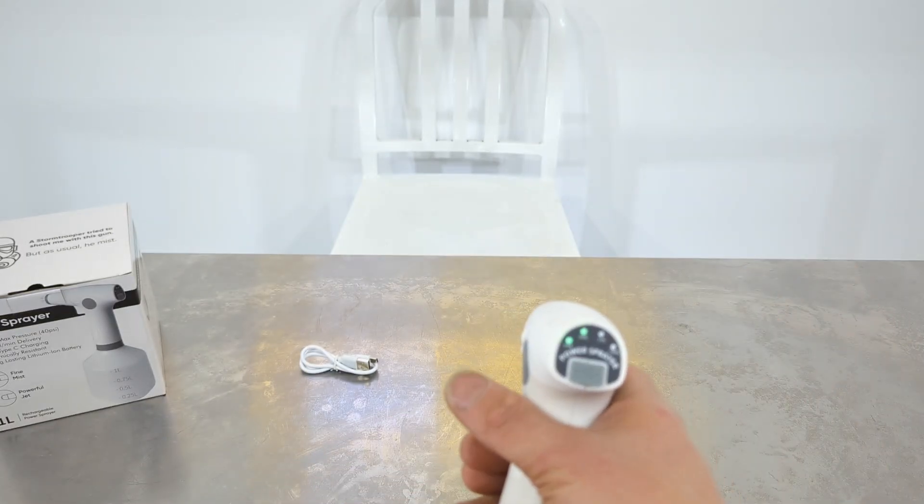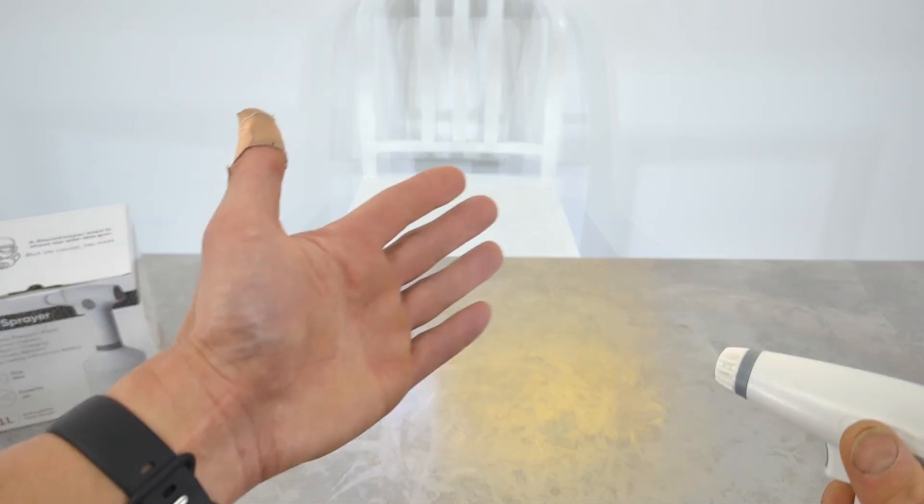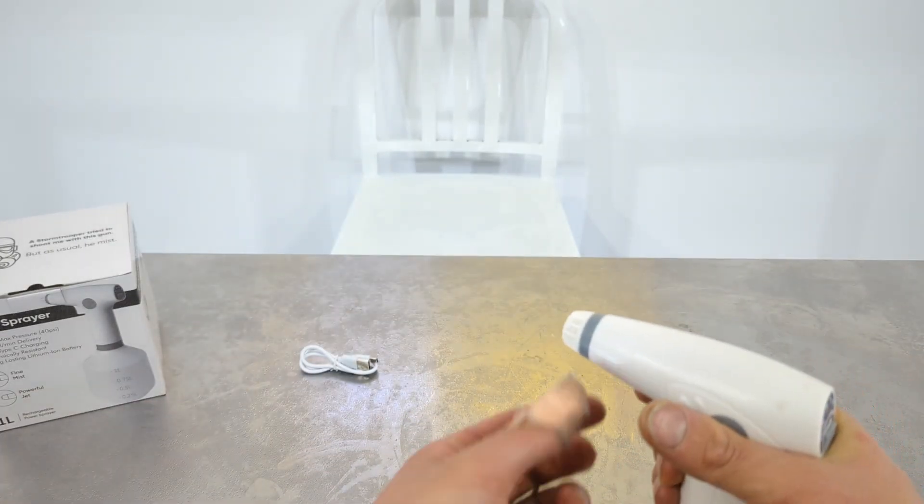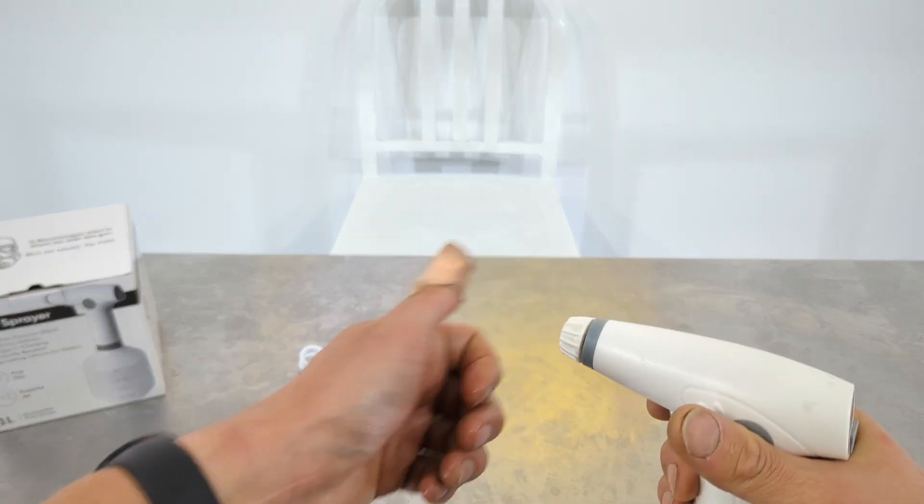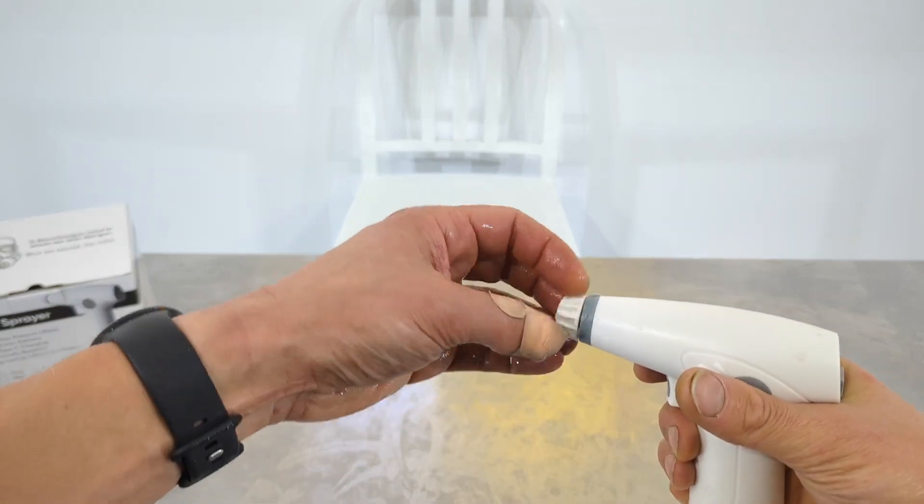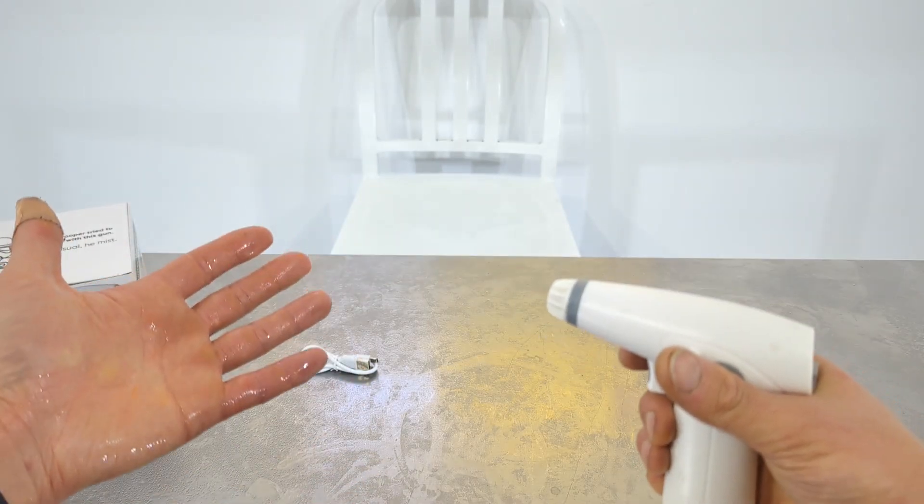And as soon as you hit the power on button you can see that mist just coming out there and it's absolutely drenching my hand there. Now you can of course adjust the nozzle on the front here to go either a jet stream like that or you can go into a fine mist by screwing it in. Very simple.